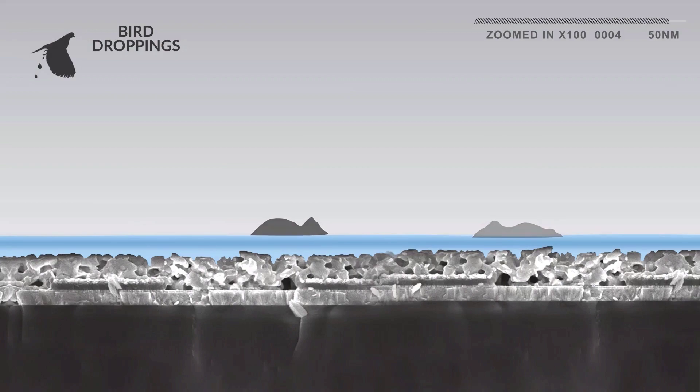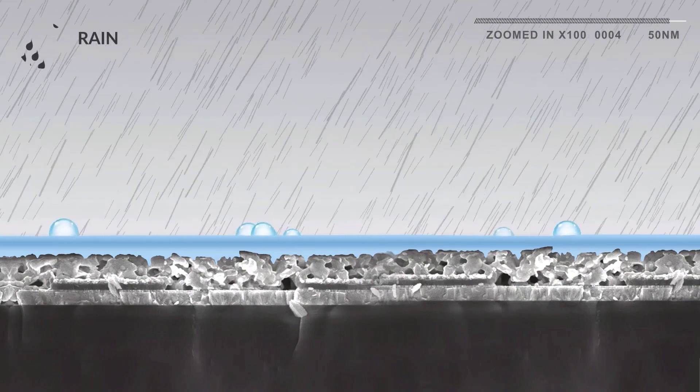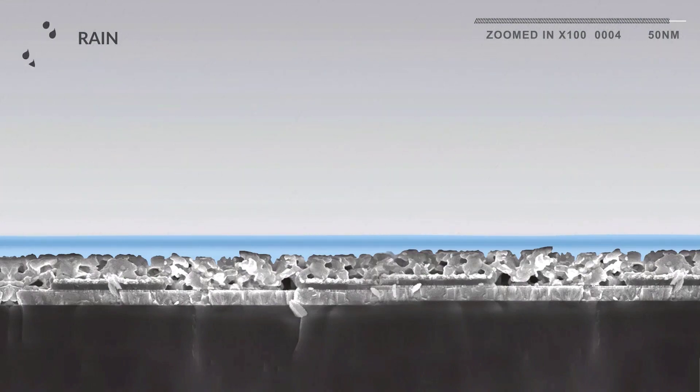Acidic bird bombs wash off with ease. The coating is super hydrophobic, creating the lotus effect. This means water rolls right off.